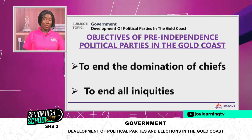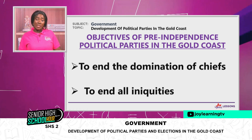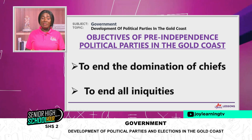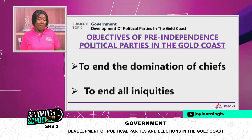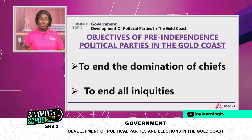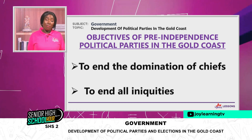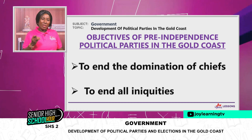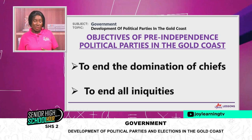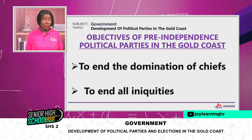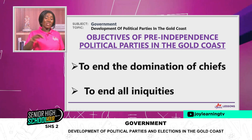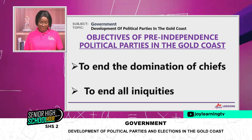It was also to end the domination of the chiefs. During colonization, especially with the indirect rule and the crown colony system, the chiefs were used to do everything the British wanted, and because of that they became corrupt and autocratic. When political parties are in place, there is no place for the chief, and the educated elites expected they would have a better chance to control governance.